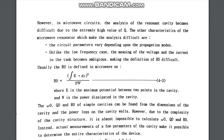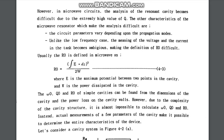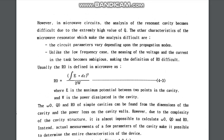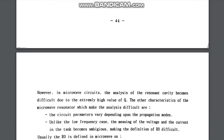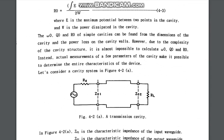At resonance, the circuit parameters are very dependent upon the propagation modes, unlike the low frequency case. The meaning of voltage and current in the tank becomes ambiguous, making the definition of R0 difficult. This resonant circuit is also known as a tank circuit, and it is particularly found in radio engineering in filters, detectors, transmitters, and receivers.